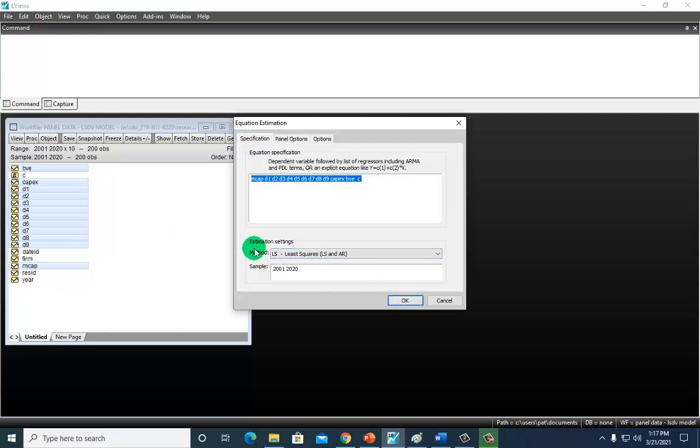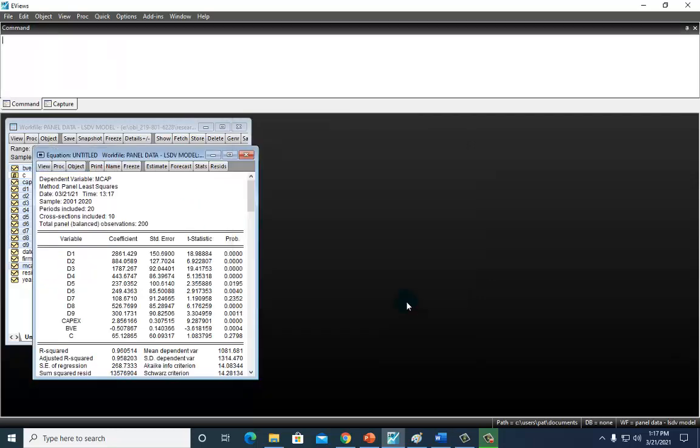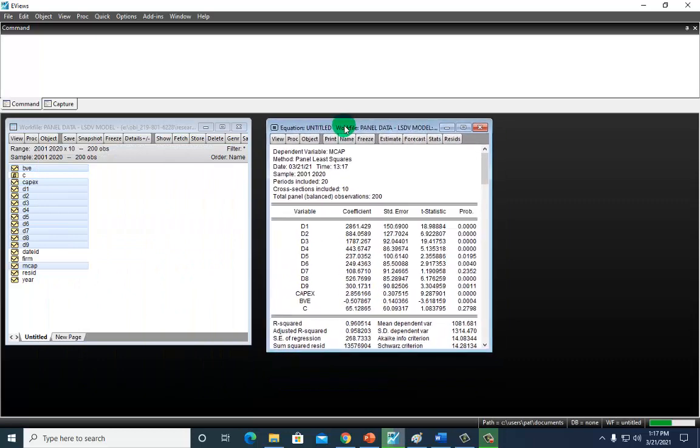And then I'm just going to go ahead and estimate the panel fixed effects, least squares dummy variable. Nothing else to do. Just click OK, and that's the output that you saw earlier with the beautiful coefficients and their p-values. So to get this situated,